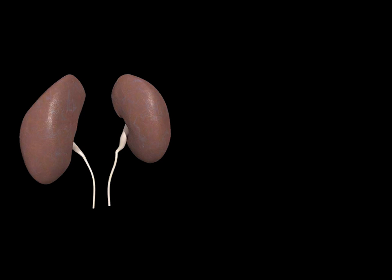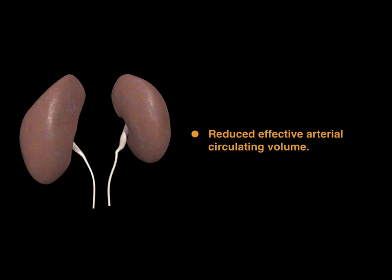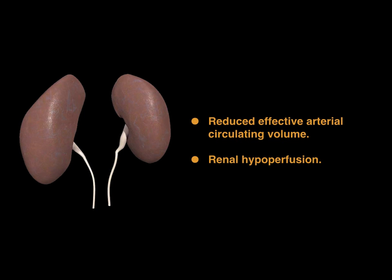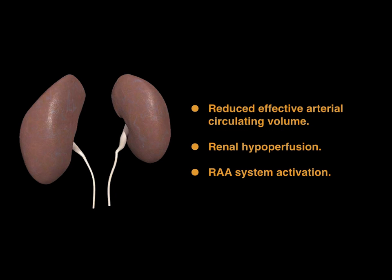In hepatorenal syndrome, the kidneys are again normal, both structurally and histologically. The portal hypertension triggered release of vasodilatory mediators leads to arterial vasodilation which affects the splanchnic or gastrointestinal circulation to a greater degree than the peripheral circulation. This results in a reduced effective arterial circulating volume with a resultant decrease in perfusion of the kidneys. The renin-angiotensin-aldosterone system is activated, causing the kidneys to retain sodium and water. The fluid retention can lead to worsening ascites and oedema, and eventually the fluid overload reaches a point that impairs cardiac output, which in turn further reduces effective arterial circulating volume.